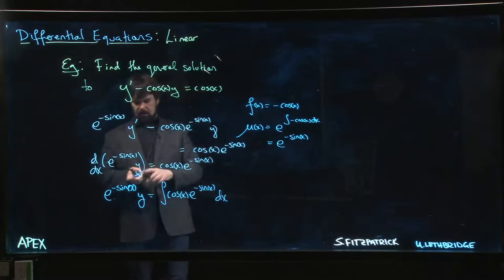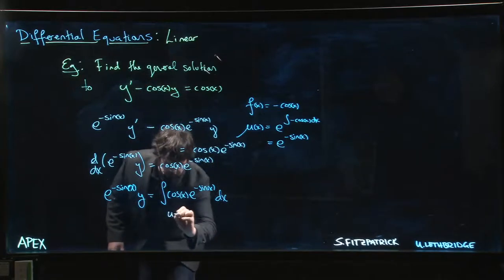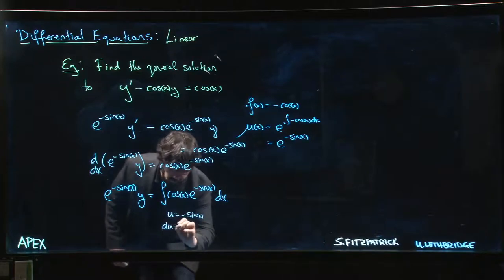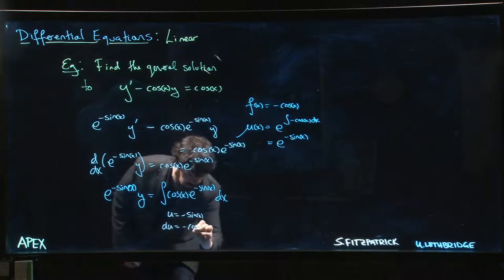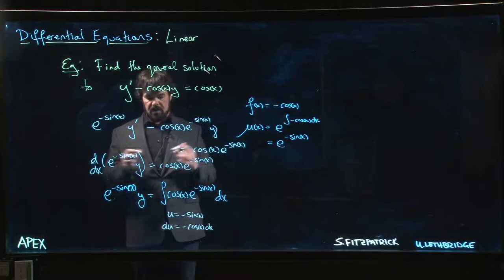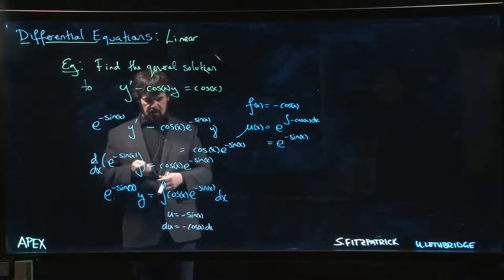And of course for that integral you're going to want to let u equal to minus sine x, du will be minus cos x dx. Then it's just going to become the integral of e to the u, which is e to the u.